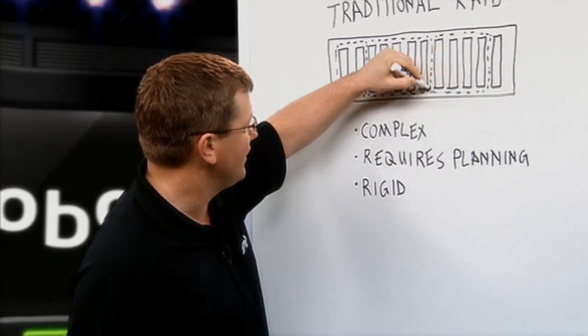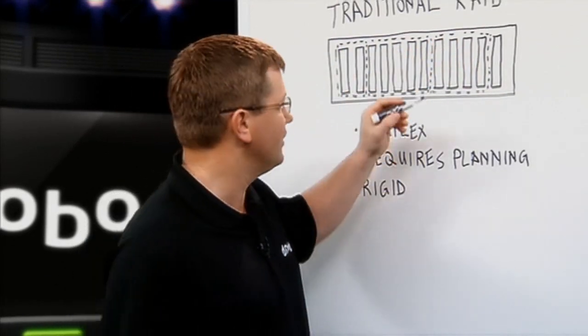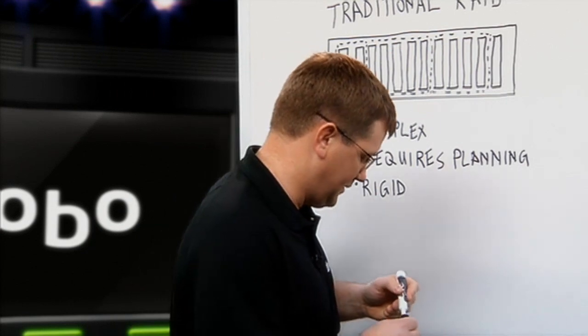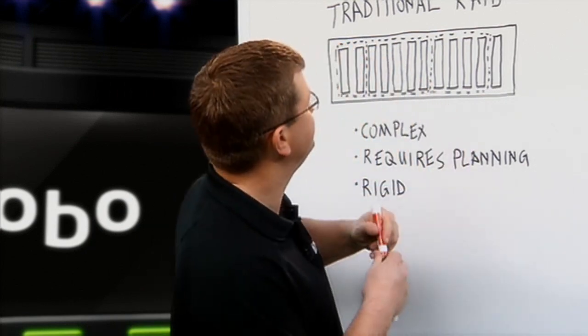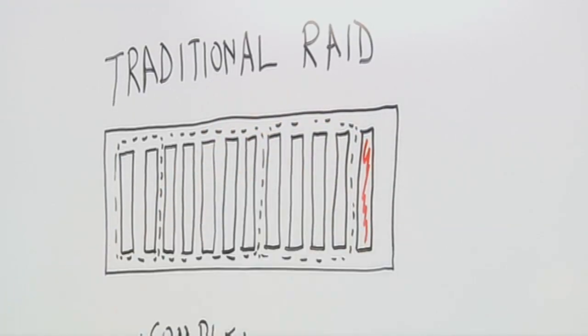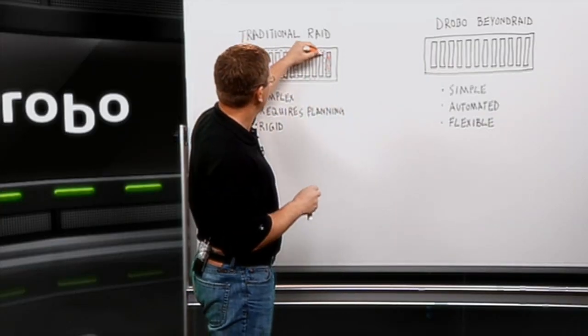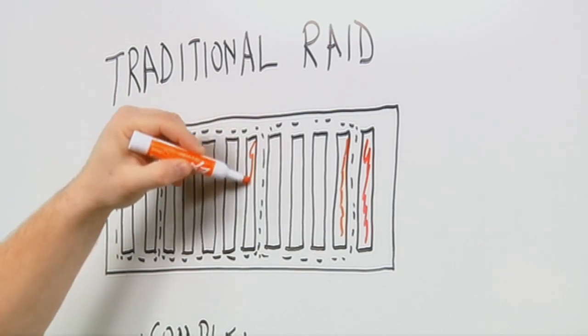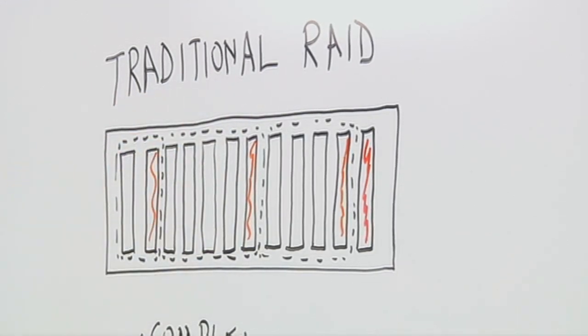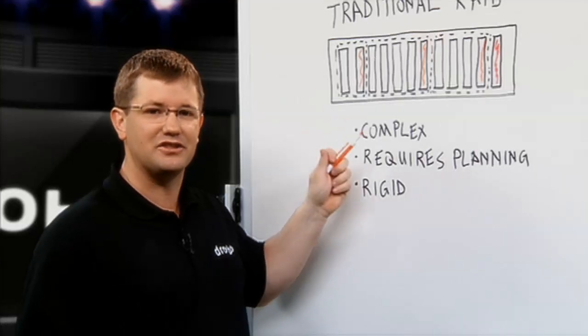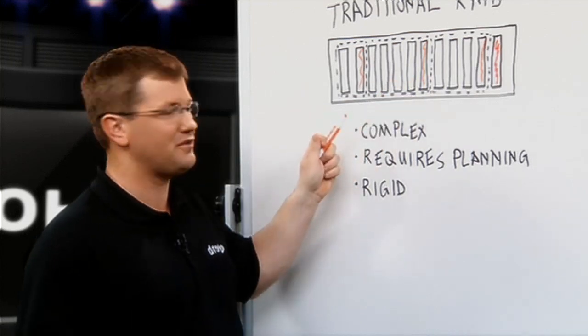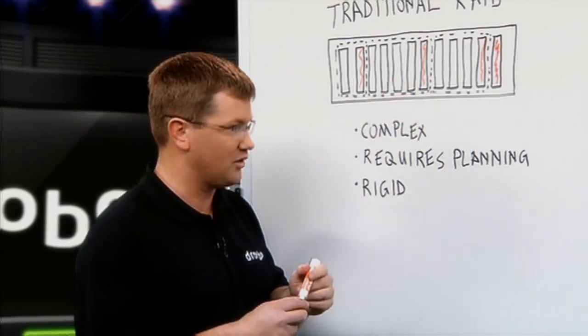And then if you want high availability when a drive fails, you may designate this last drive as a hot spare. And it's getting very complex, and you have a lot of drives used for overhead protection. And then once you make this decision, it's very rigid. So once you make this decision, if you want to change it, you really have to tear it down and start all over again.